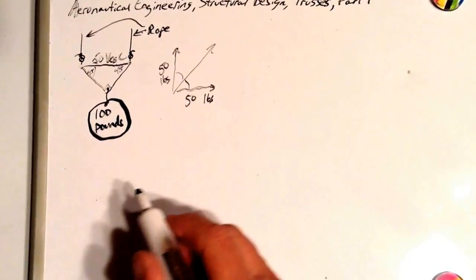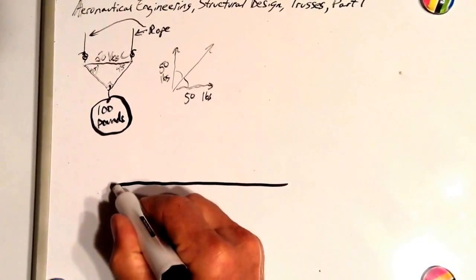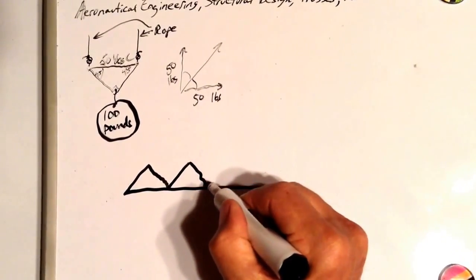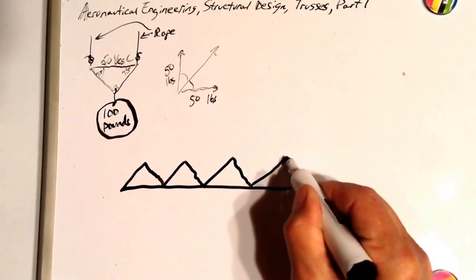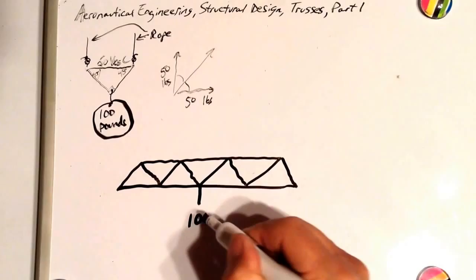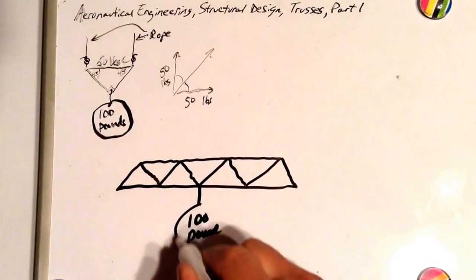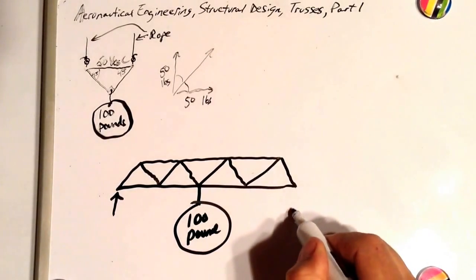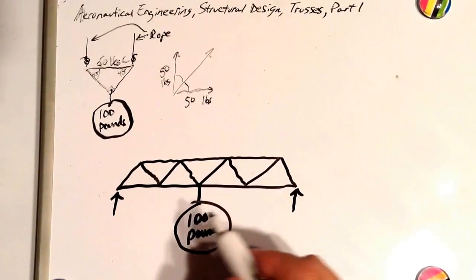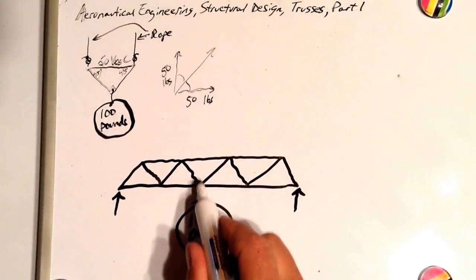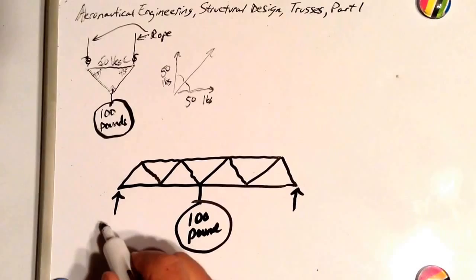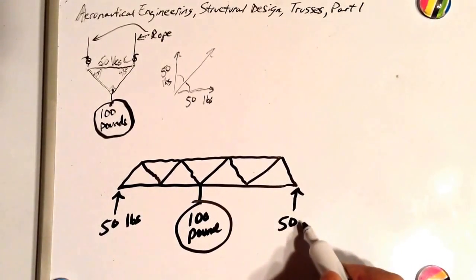Here's a slightly more complicated structure — let's draw a bridge. It has a 90 degree angle and 45 degree angles. There's the top flange and the bottom flange. We have our same 100 pound weight hanging from the middle of it, with a bridge support on each side. Let's say the bridge is weightless and the only weight is what's hanging from the middle. If this is symmetrical, each bridge support is supporting half the weight — 50 pounds each.